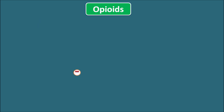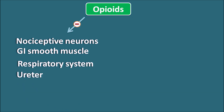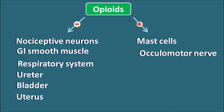To understand the pharmacological actions of opiates, we can divide them into two categories: inhibitory response and stimulatory response. The inhibitory actions include nociceptive neurons, GI smooth muscle, respiratory system, and a few smooth muscles like the ureter, bladder, and uterus. The stimulatory actions are on organs like mast cells, oculomotor nerve, gallbladder, and CTZ chemoreceptor trigger zone. Most of the stimulatory actions are not related with opiate receptors. For example, opiates can act as toxic chemicals thereby stimulating the CTZ resulting in nausea and vomiting.